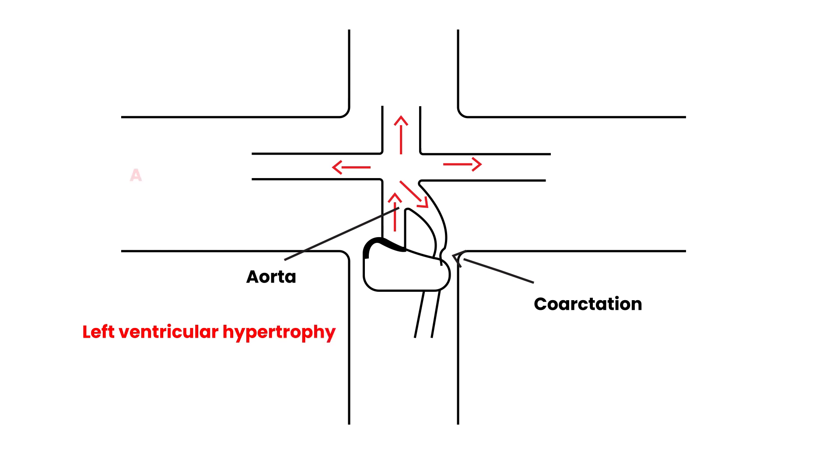The next thing that happens is in the upper extremities, the pressure before the coarctation will be higher. So you will have essentially increased blood pressure in the upper extremities. And similarly, the pressure after the coarctation will be lower. So you will have lower blood pressure in the lower extremities. That is a very key understanding to the anatomy of coarctation of the aorta.